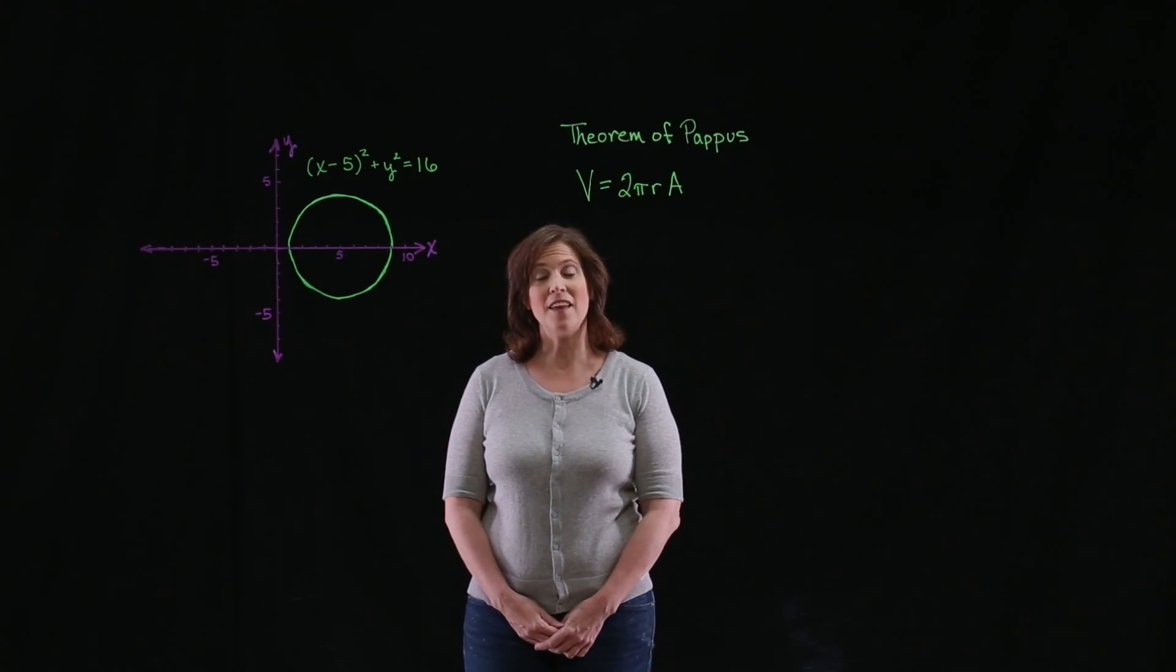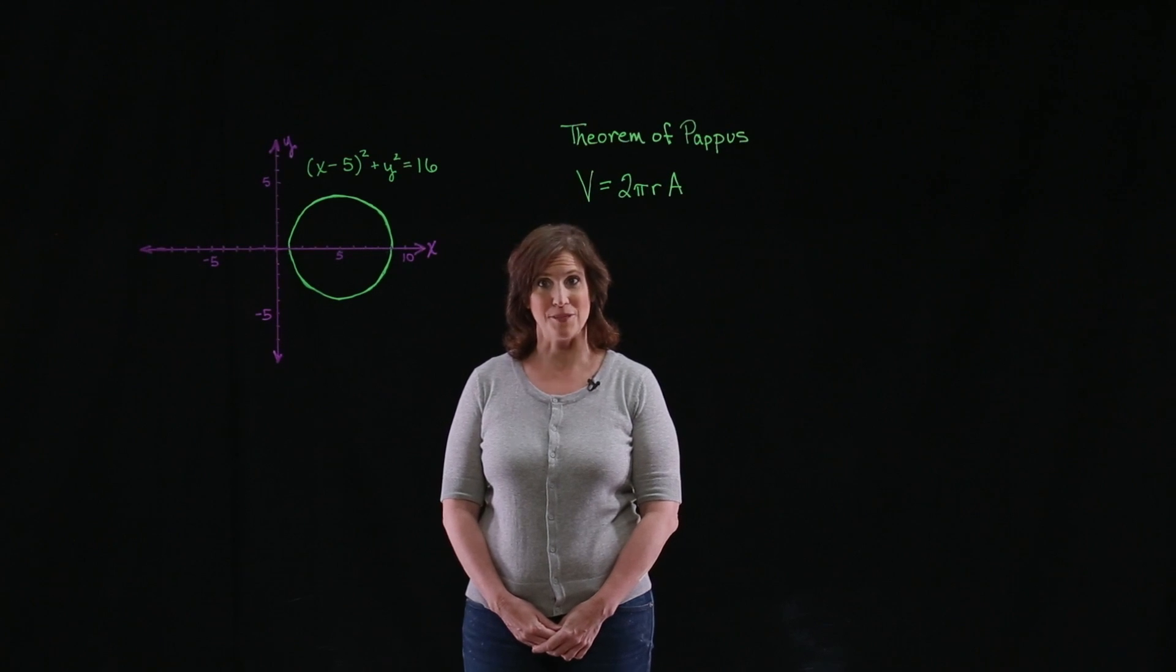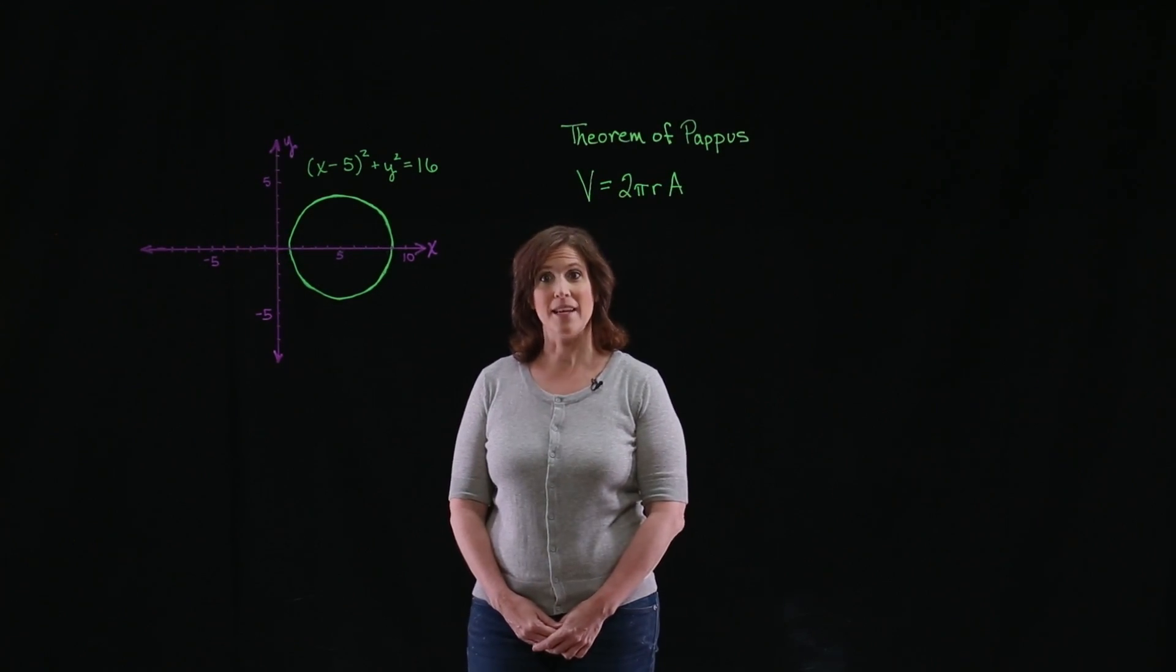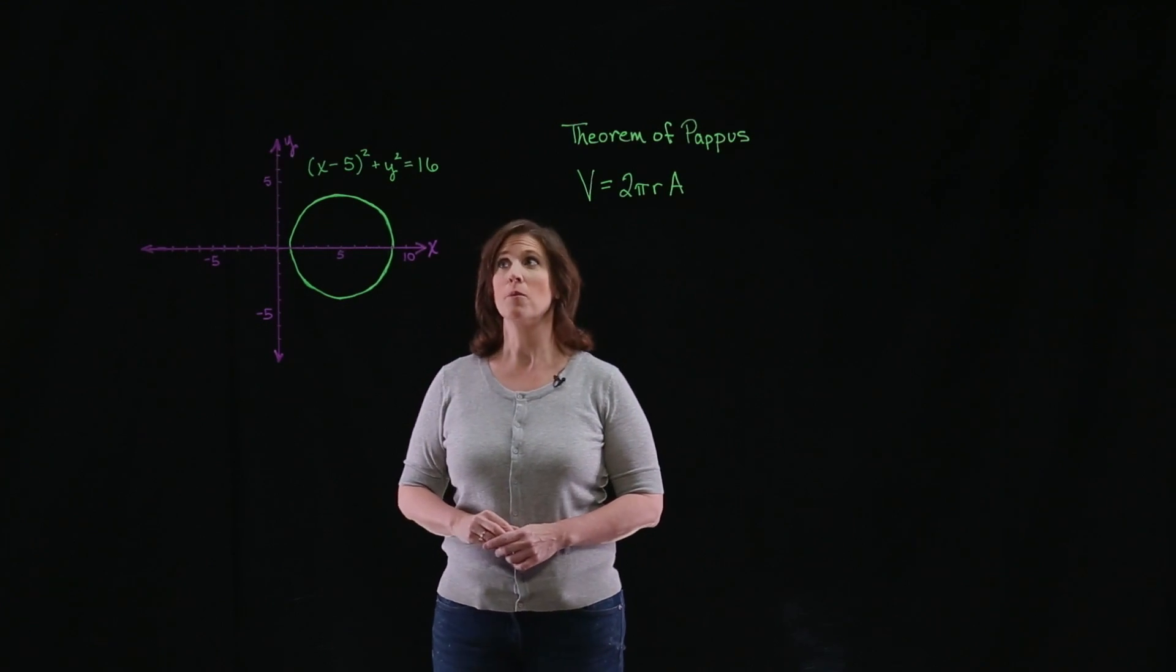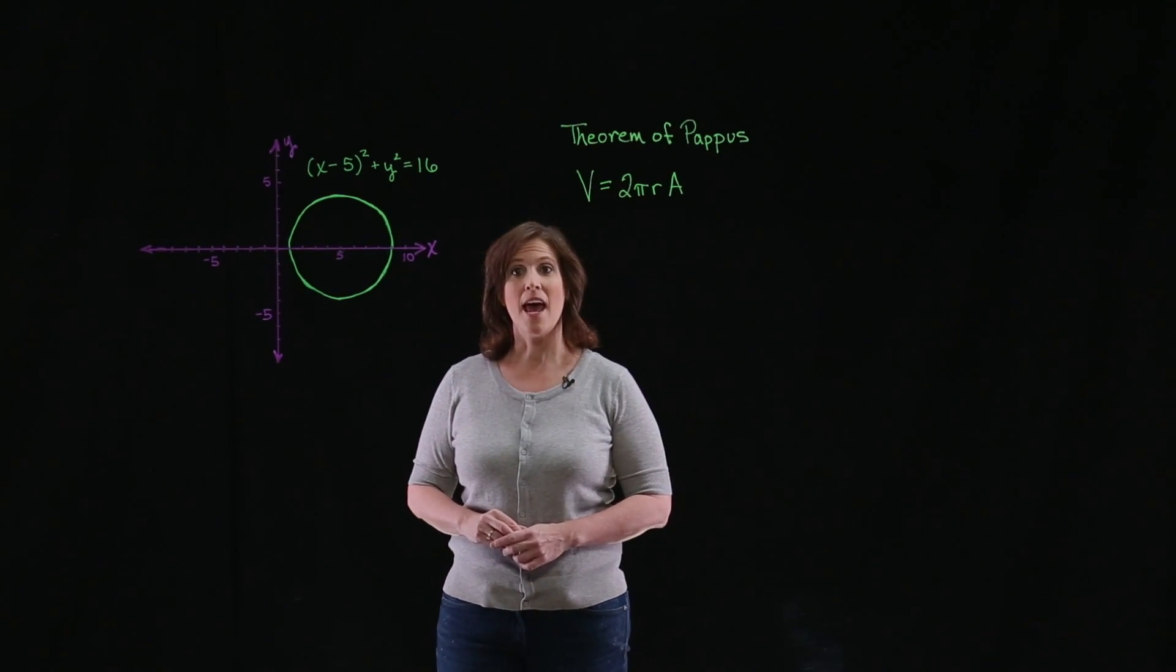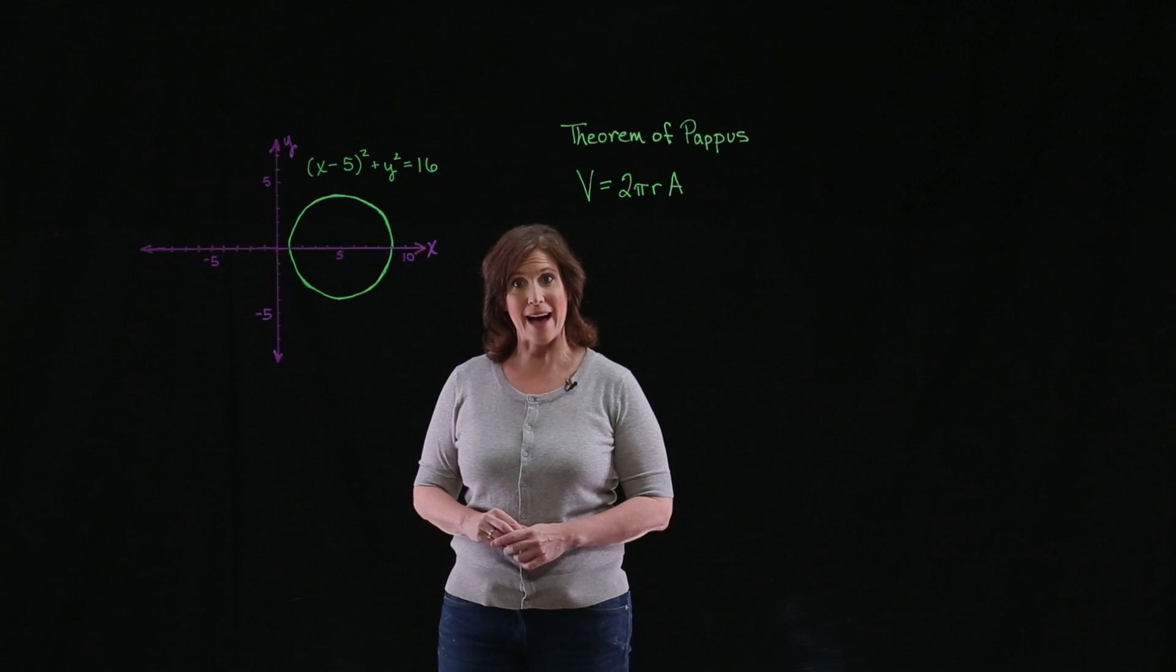In this problem, we're asked to find the volume of a solid of revolution. The solid is created by taking the circle (x - 5)² + y² = 16 and revolving it around the y-axis.